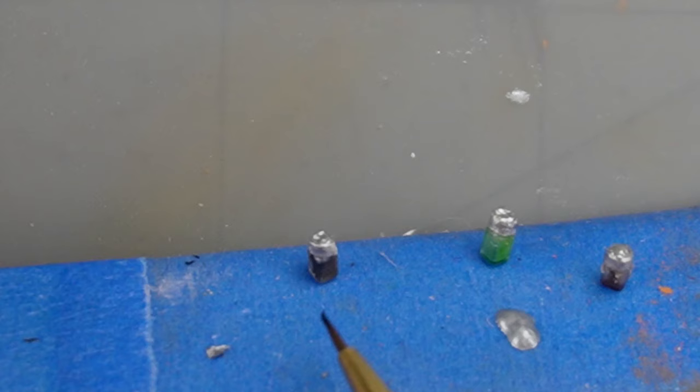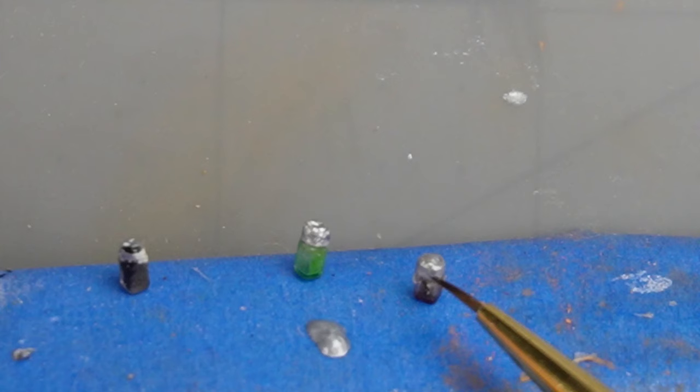I made lids for three of the jars and painted them silver, and then added small bits of paint to make them look used.